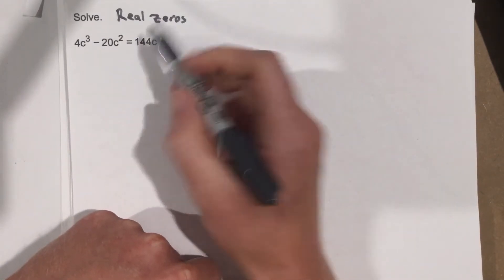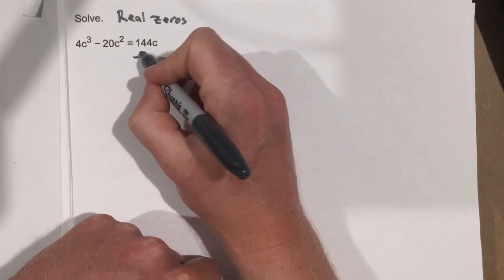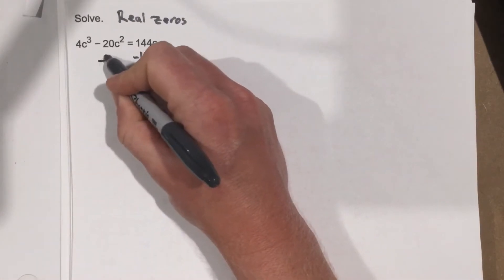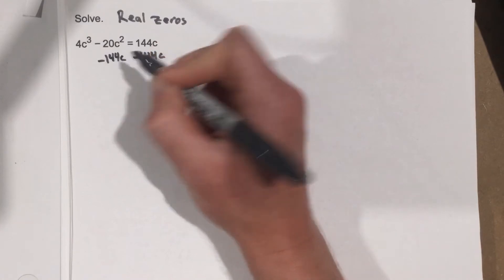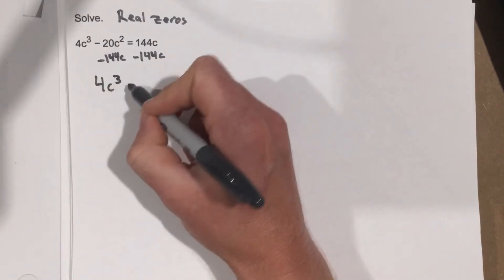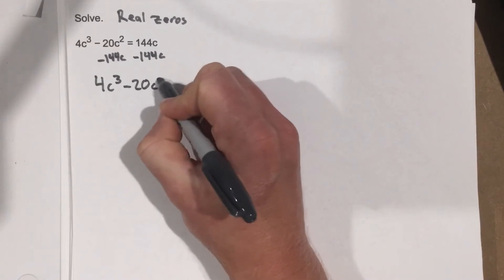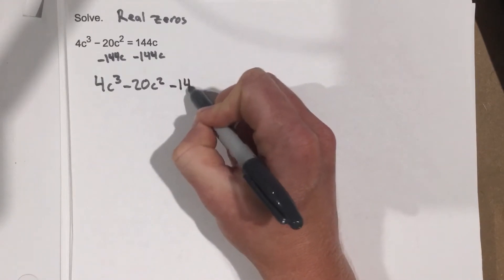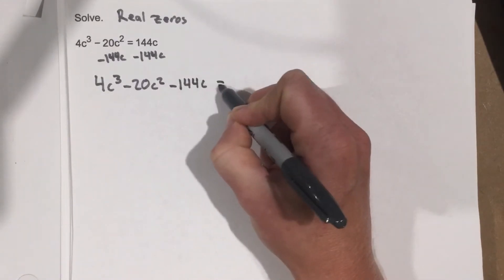When I go to solve a polynomial, I've got to get it set equal to 0. So I'm going to subtract 144c to the other side. When I do that, I get 4c³ minus 20c² minus 144c equals 0.